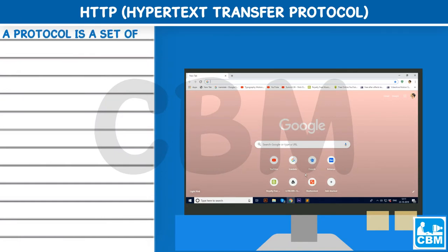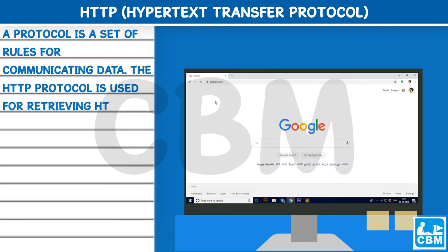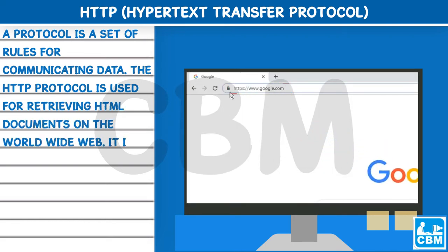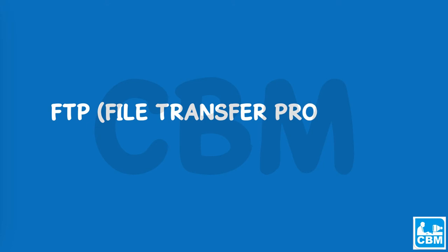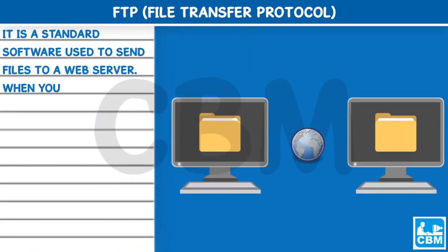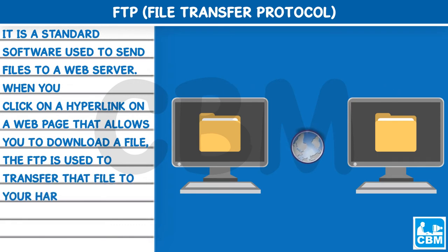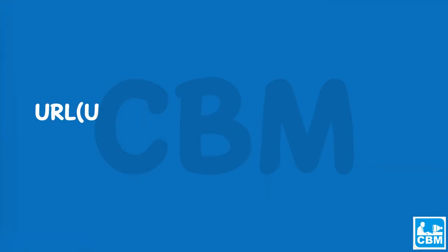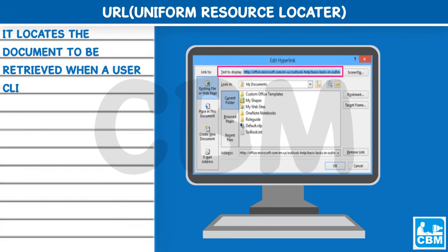An HTML document is in plain text format and can be created in any text editor, for example Notepad. HTTP (Hypertext Transfer Protocol): A protocol is a set of rules for communicating data. The HTTP protocol is used for retrieving HTML documents on the World Wide Web. It is one of the popular protocols used for communication between computers. FTP (File Transfer Protocol): FTP is a standard software used to send files to a web server. When you click on a hyperlink that allows you to download a file, FTP is used to transfer that file to your hard disk drive.